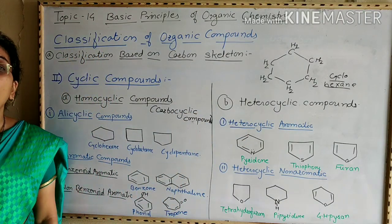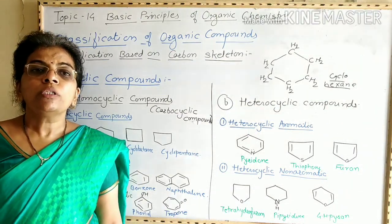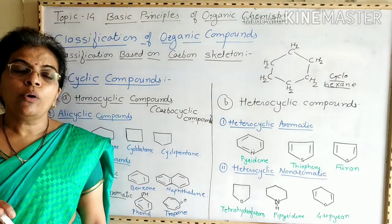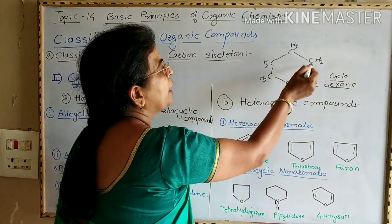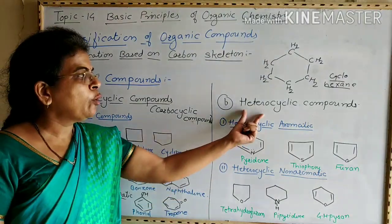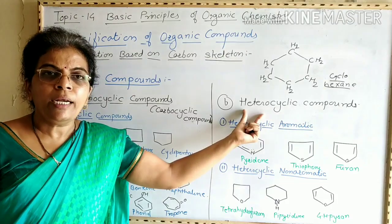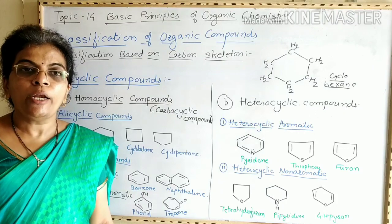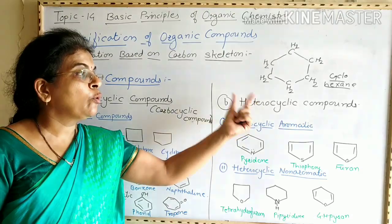Homocyclic compounds are those in which the ring is formed by only carbon atoms — that is, in ring formation only carbon atoms take part. They are named as homocyclic compounds. In case of heterocyclic compounds, in ring formation, along with carbon atoms, some heteroatoms like oxygen, nitrogen, or sulfur can also take part. Therefore they are named as heterocyclic compounds.